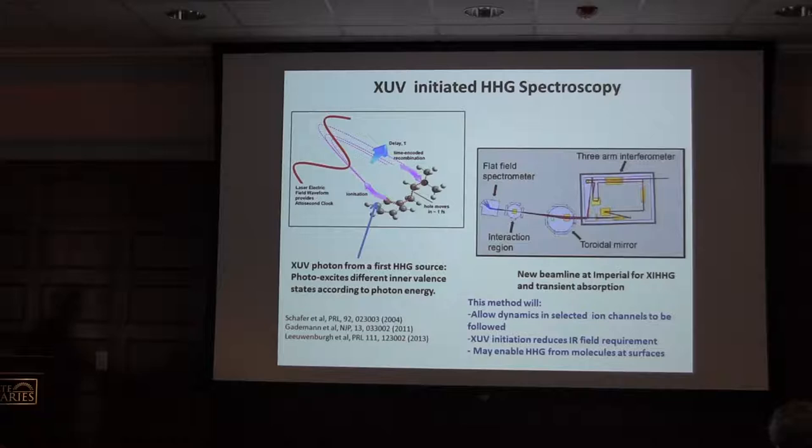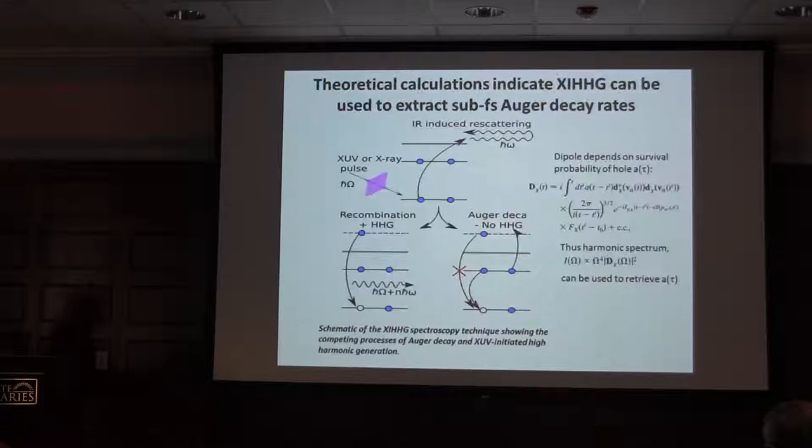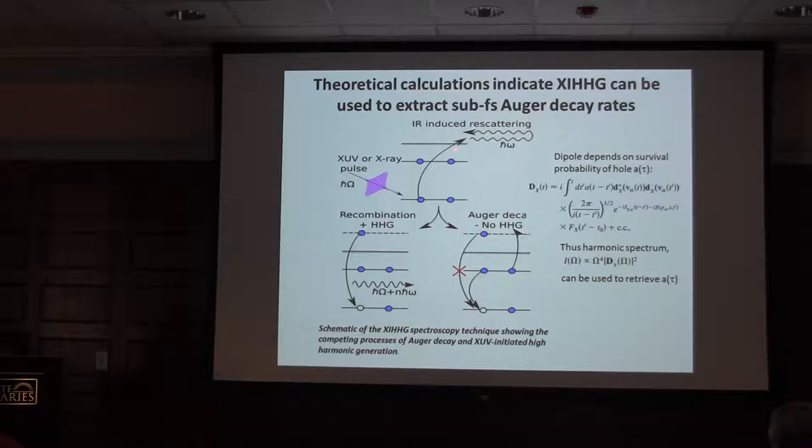Then a weaker infrared field is used just simply to return the electron and cause the recombination. So you can drop the infrared intensity, particularly if you're using longer wavelengths, and return your electron with some kind of efficiency. I want to tell you about what you might learn, at least based upon some theory that we recently did. This is a paper just published by Jonathan Levenberg, Misha Ivanov, and Vitaly Averbukh, and myself.